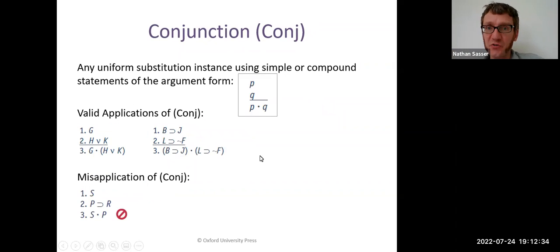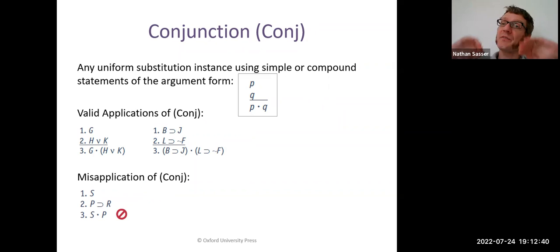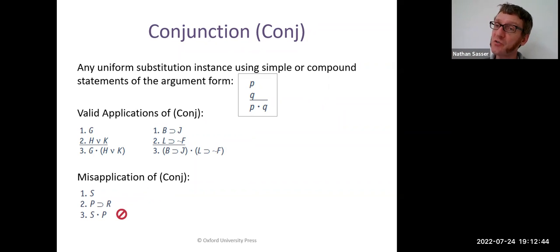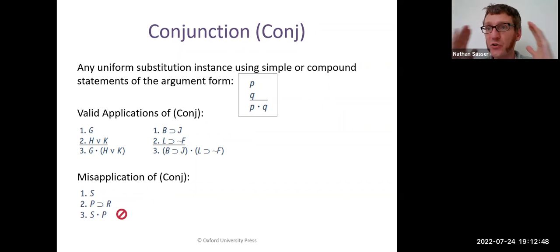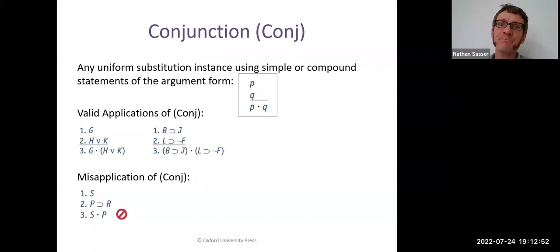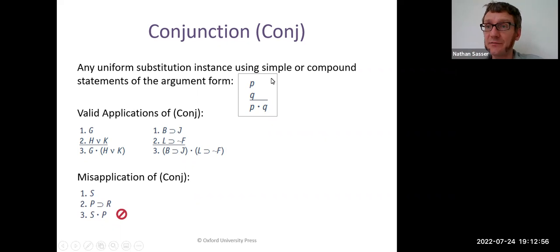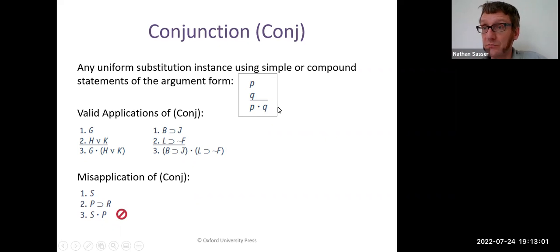Next, the conjunction rule. This is like a complement — almost the reverse of the simplification rule. The simplification rule lets you break apart an 'and' statement; the conjunction rule lets you put an 'and' statement together. So you need to know both and know that they're complementary. If you've got P and you've got Q, then you can conclude P and Q — you can make a conjunction out of them.